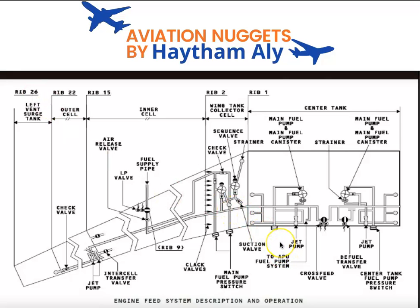You need to remember that fuel consumption is from the root to the tip — first from the center tank, then from the inner cell, then from the outer cell. We do this to always have fuel at the wing tip, in order to reduce bending stresses.